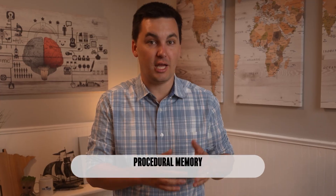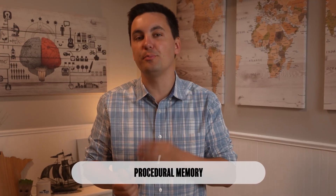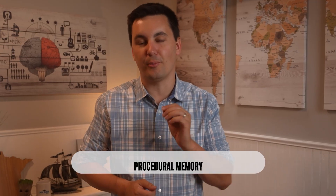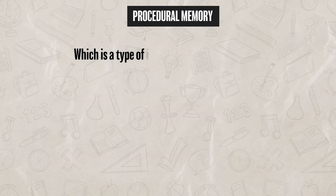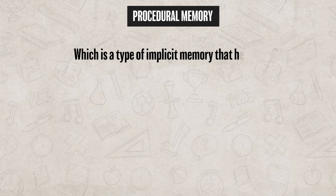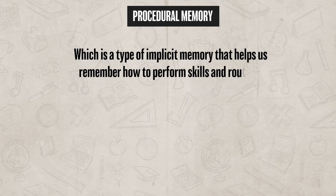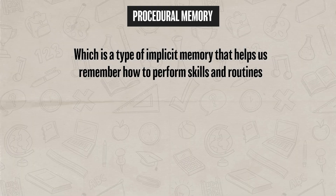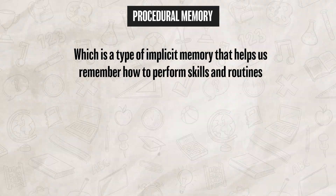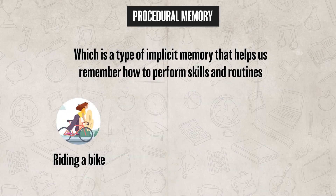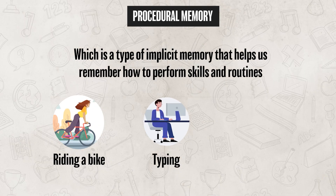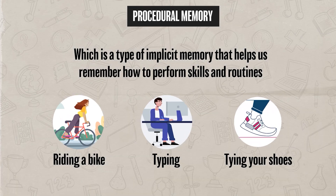These are examples of implicit memory, and more specifically procedural memory, which is a type of implicit memory that helps us remember how to perform certain skills and routines, like riding a bike, typing, or tying your shoes.